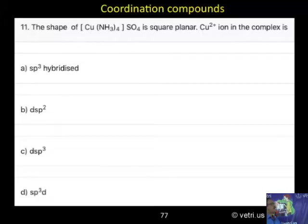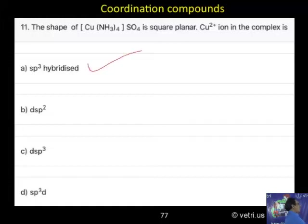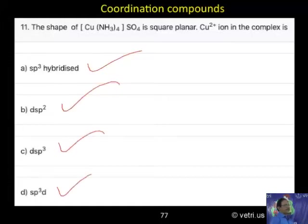The shape of Cu(NH3)4·SO4 is square planar. The Cu2+ ion in the complex is: sp3 hybridized, dsp2, dsp3, or sp3d — which is correct?